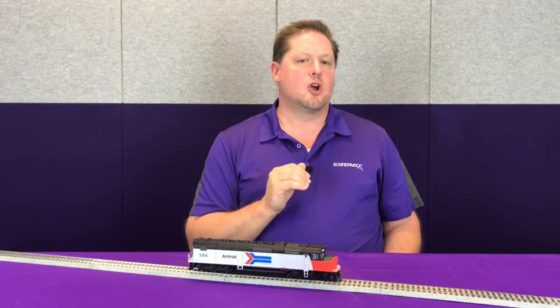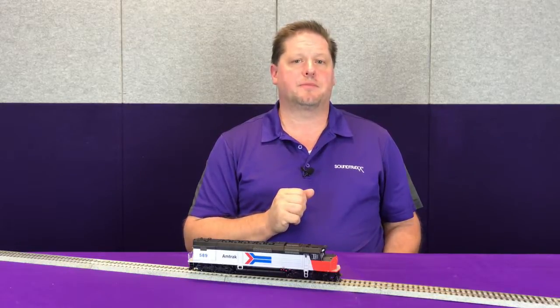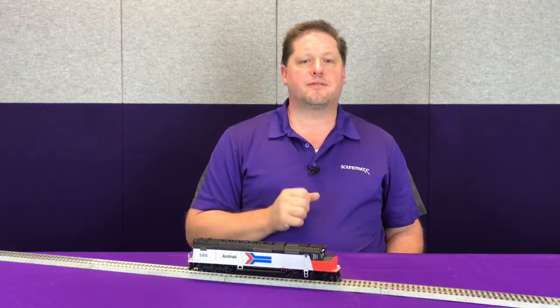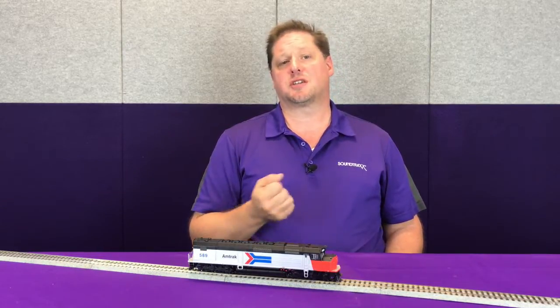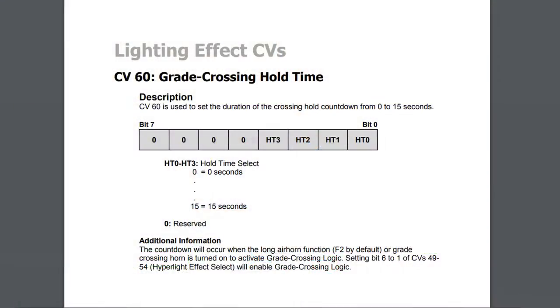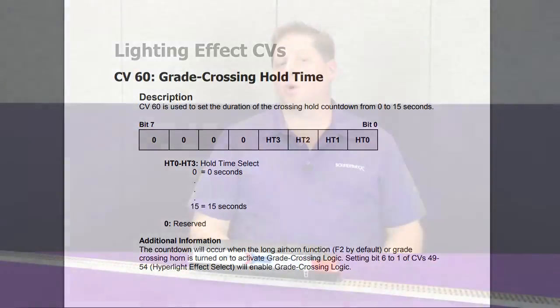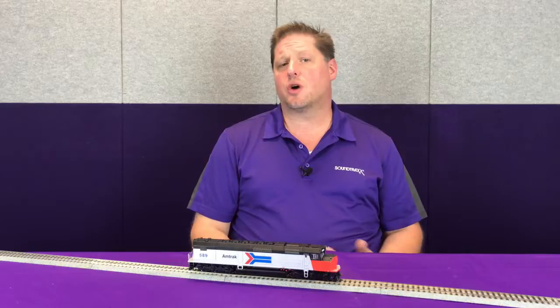The next qualifier is the hold time. If you have something enabled with crossing logic — such as ditch lights — this determines how long that lighting effect will be displayed after the horn is pressed off. You set that from a value of 0 to 15, representing 0 to 15 seconds.